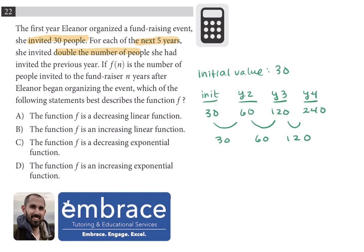This increase is not constant — if the increase were constant it would be a linear function, so answer choices A and B are out. That means it has to be exponential, and the fact that the numbers are increasing tells us it's an increasing exponential function, not decreasing. So the answer is choice D.